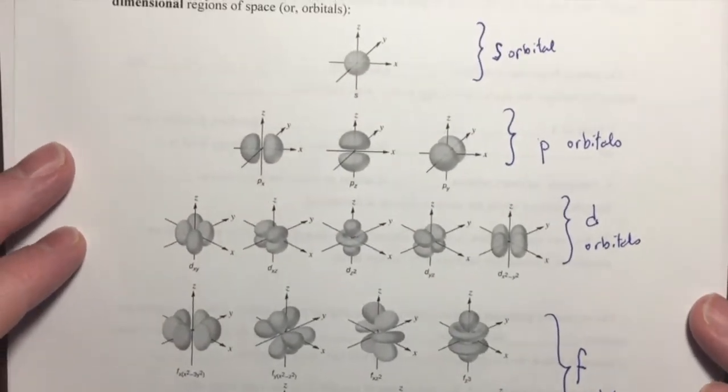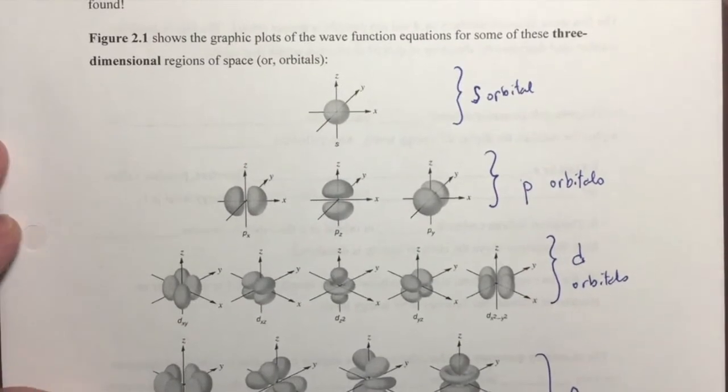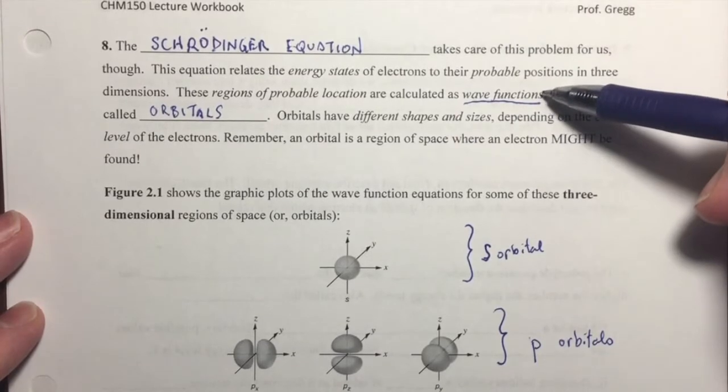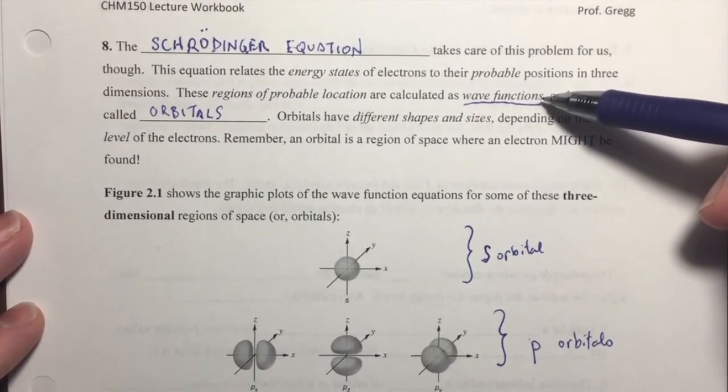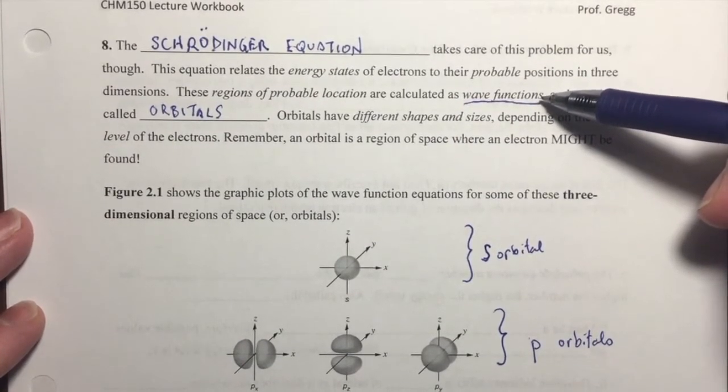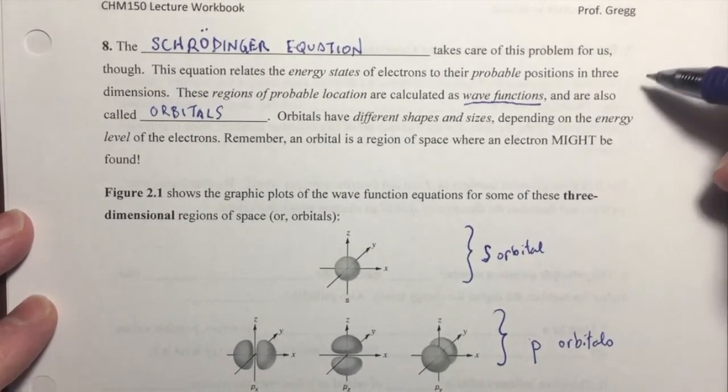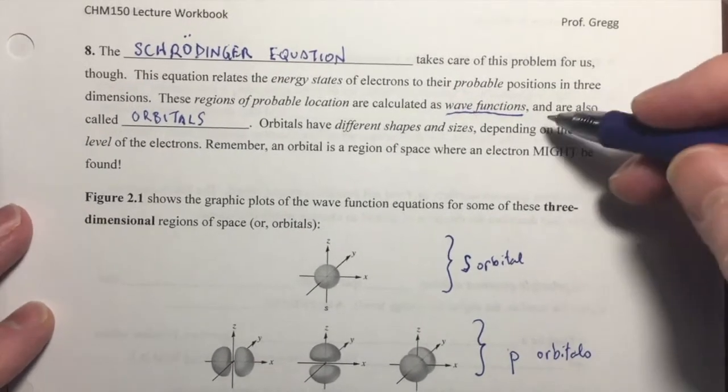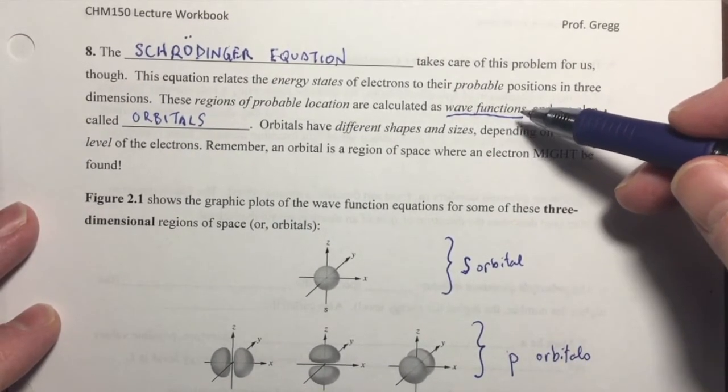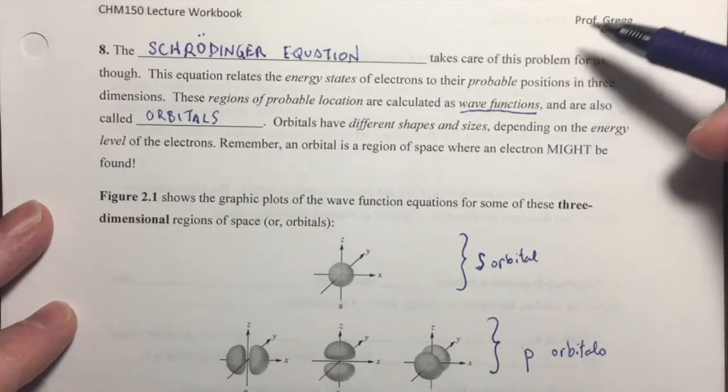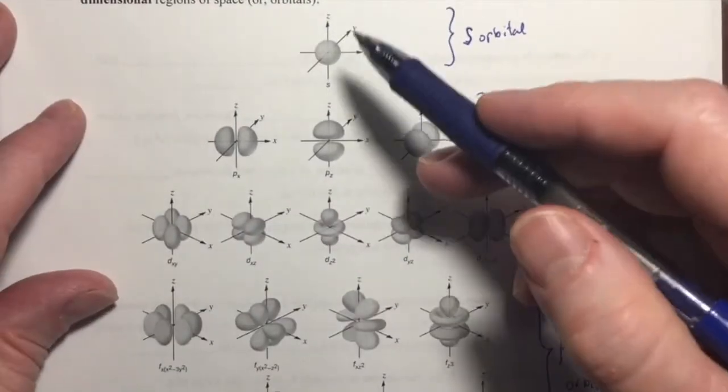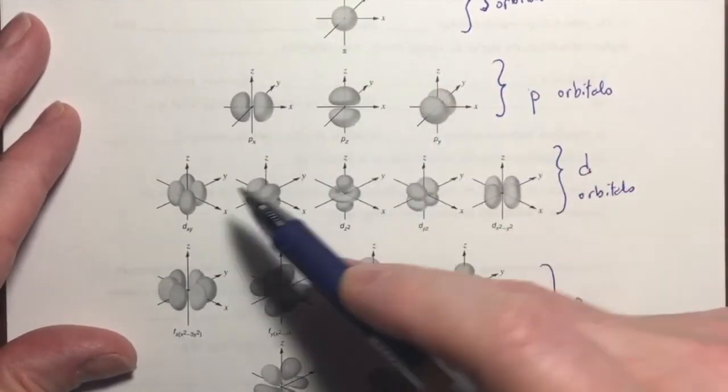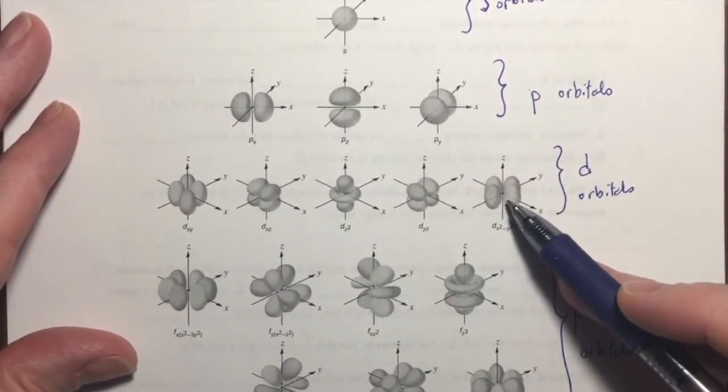So, again, just to recap, the Schrödinger equation allows us to calculate a wave function, which is basically a mathematical function that describes the wave, the standing wave, that an electron forms. And if you take the square of the wave function, you get a three-dimensional graph, which is the orbital, which gives us the three-dimensional region of space where you might find an electron located.